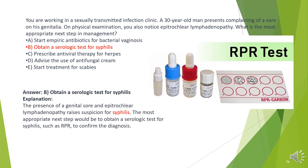The answer is B. Obtain a serologic test for syphilis. The presence of a genital sore and epitrochlear lymphadenopathy raises suspicion for syphilis. The most appropriate next step would be to obtain a serologic test for syphilis, such as RPR, to confirm the diagnosis.